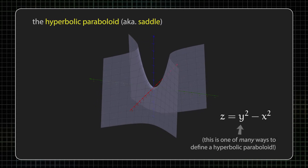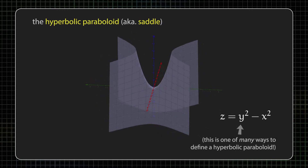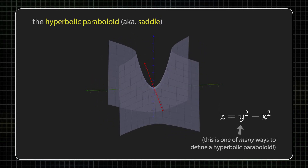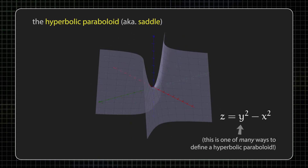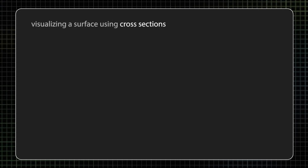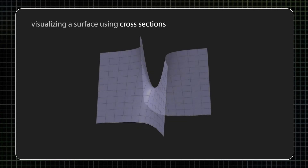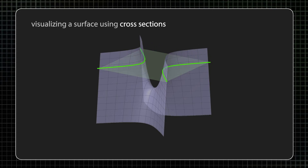Before we get into drawing, I need to point out some mathematical facts about our friend the hyperbolic paraboloid. I said this was going to be a video about drawing, and here I am about to talk about math for a while, but bear with me — it'll be worth it. One of the best ways to understand what a surface in three-dimensional space looks like is to look at its cross sections.